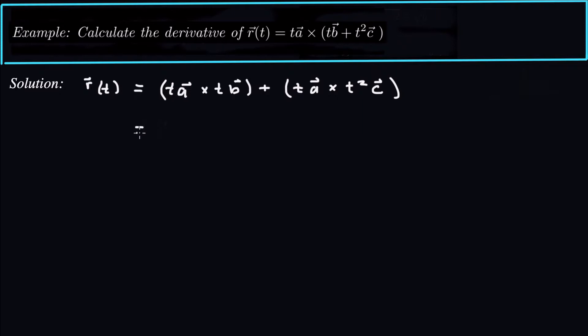Now, we know that real numbers can come out of the cross product. So here's a real number, here's a real number. Both of them come out of the cross product. It's basically like 2a and 3b, that comes out as 6. Well here we have t and t, so that's going to come out as t squared.